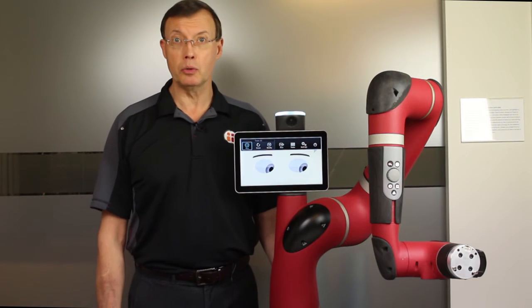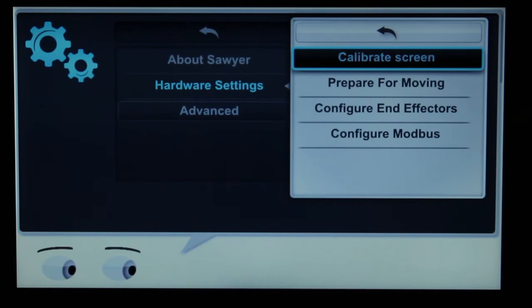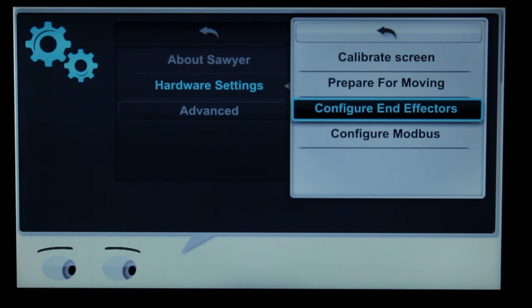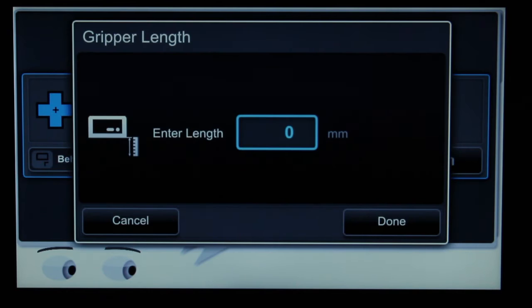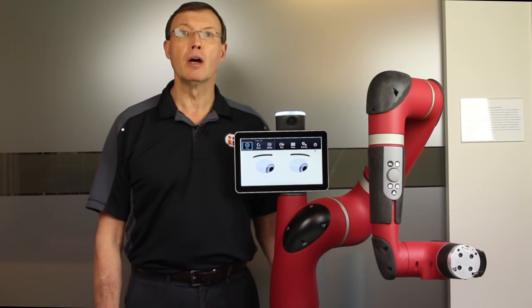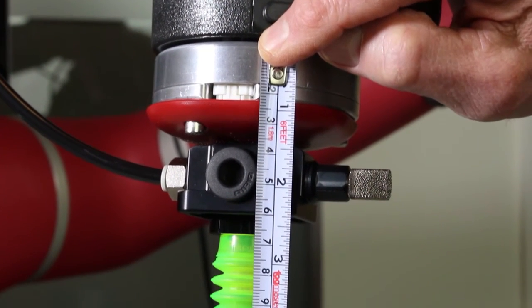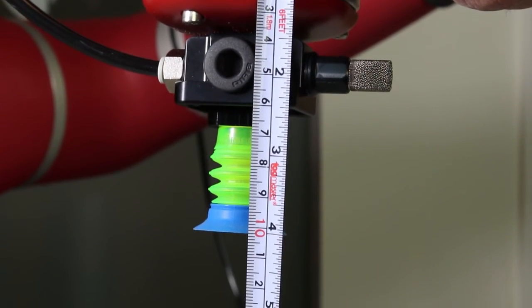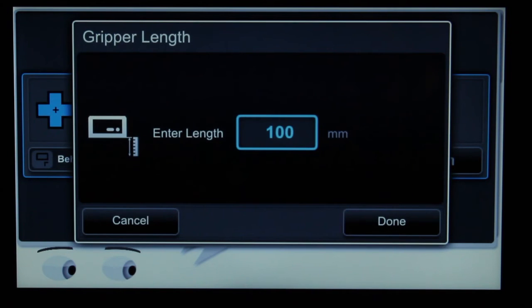Next, you will go to the main menu and select settings, hardware settings, configure end effectors, and enter the length and weight of the gripper. Enter the length of the gripper from where the Baxter gripper adapter plate bolts to the training cuff and measure to the end of the vacuum cup, including any extensions. Press done.